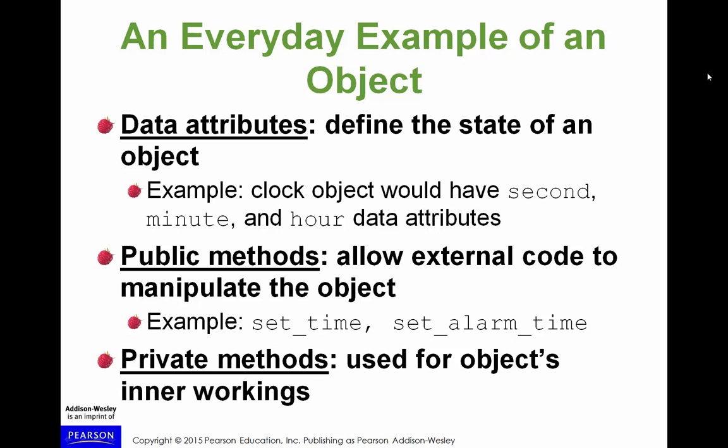This set of slides includes an everyday example of an object — a clock — as a metaphor for how an object might look in a program. Imagine a clock: its data attributes include the current second, current minute, and current hour. For example, if it's 5:15:10 AM, then the hour is 5, the minutes are 15, and the seconds are 10. These are the attributes of the clock — the data that it stores. What methods are necessary for a clock? A clock has to be set to accurate time, so one method is the ability to set the time.